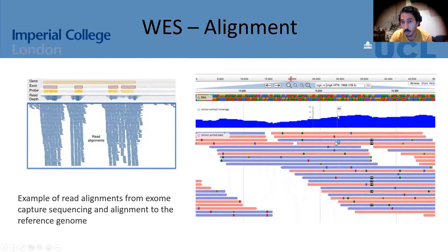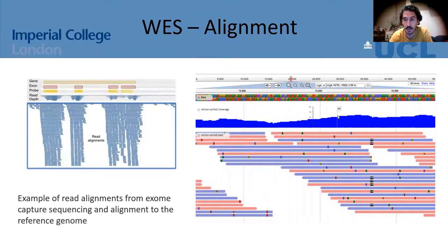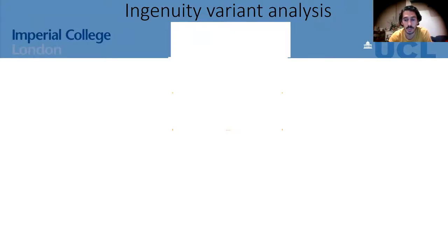The read alignments are then aligned to the reference genome so we can see differences in the exons we're sequencing. We have thousands of SNPs — single nucleotide polymorphisms — in our genome, so we need a way of prioritizing all these variants. I used a program called Ingenuity, a user-friendly software that can filter out variants and prioritize genes of interest. I'll go through the different filters applied.